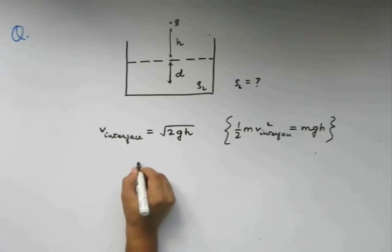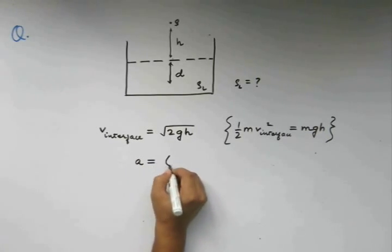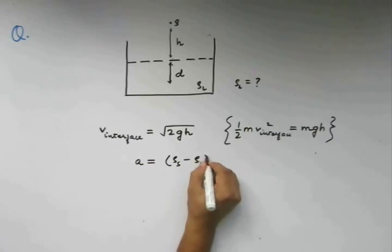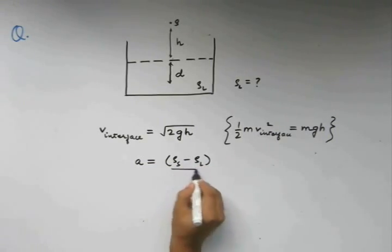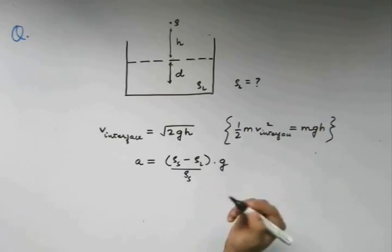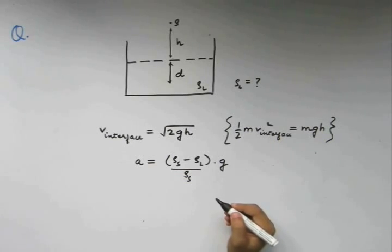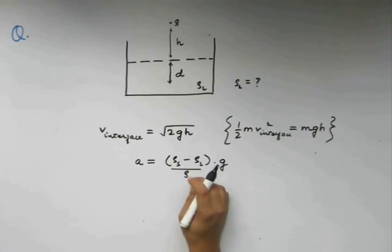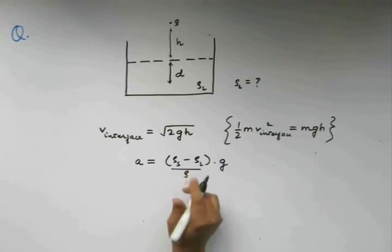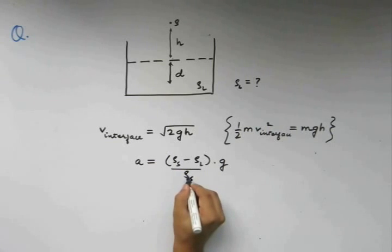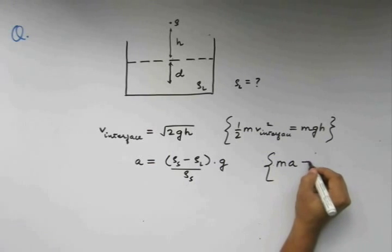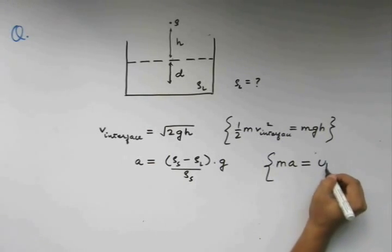Initially, in our discussion we found that the acceleration is going to be rho s minus rho l divided by rho s times g. Sorry, this will be l. This is s. This comes from the fact that the mass times acceleration is going to balance out the upthrust.